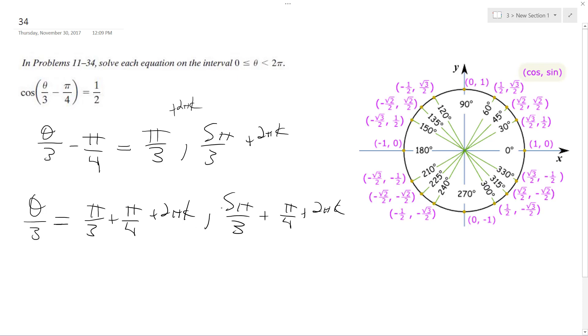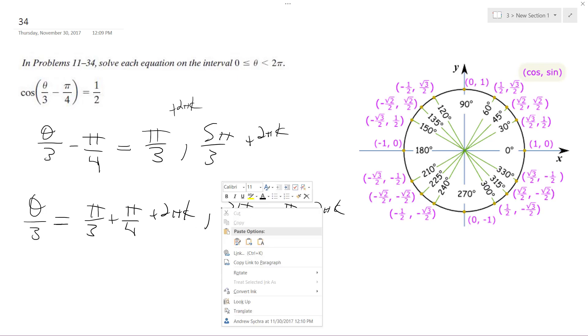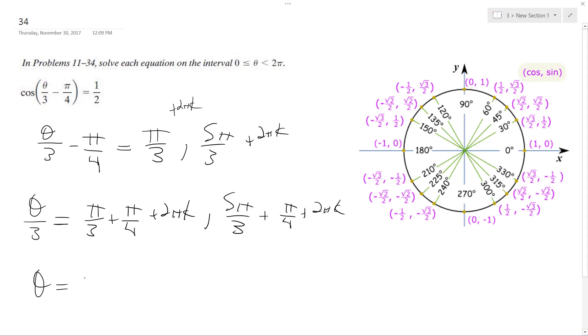And then I multiply by 3 finally, and then I get theta is equal to, and I'm going to get lazy, I'm going to just combine everything, 23 pi over 4 plus 6 k pi. And then theta is also equal to 7 pi over 4 plus 6 k pi.